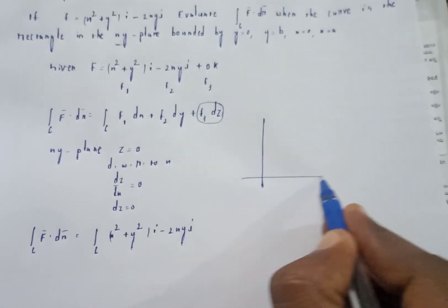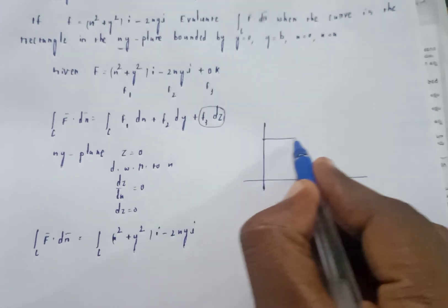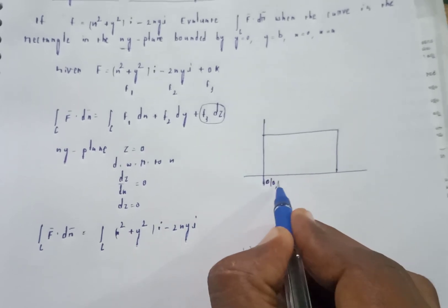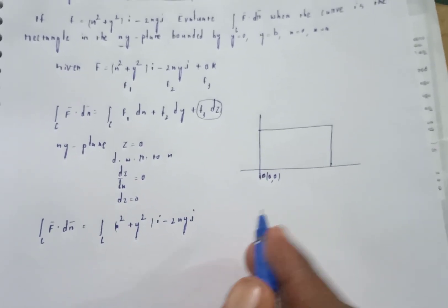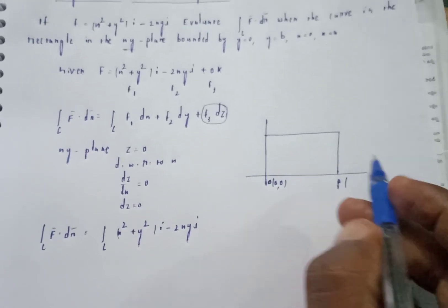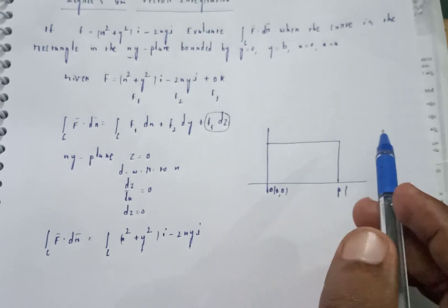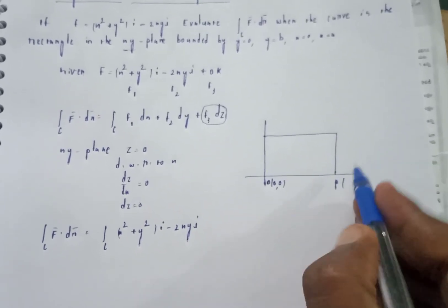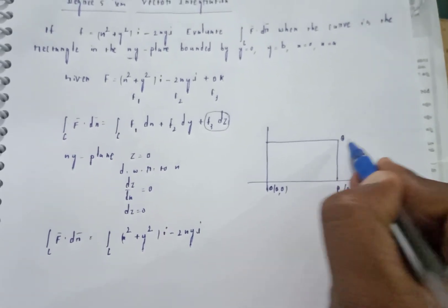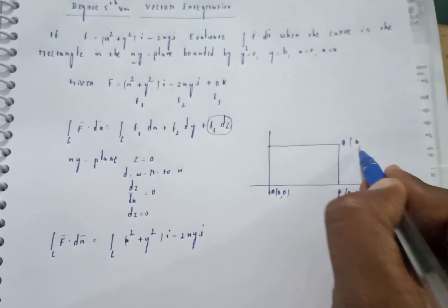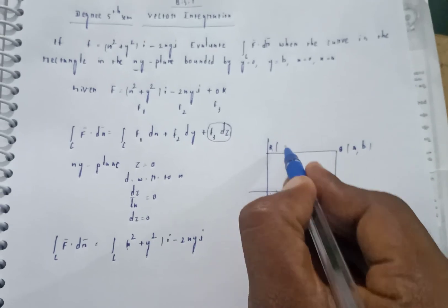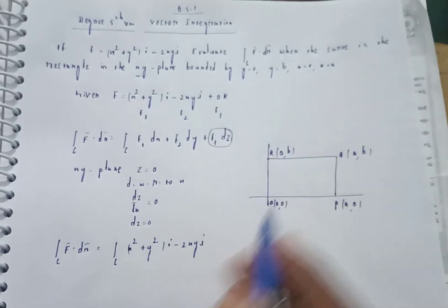The rectangle has four vertices: O (0,0), P (a,0), Q (a,b), and R (0,b). We evaluate the line integral along each side in the clockwise direction.